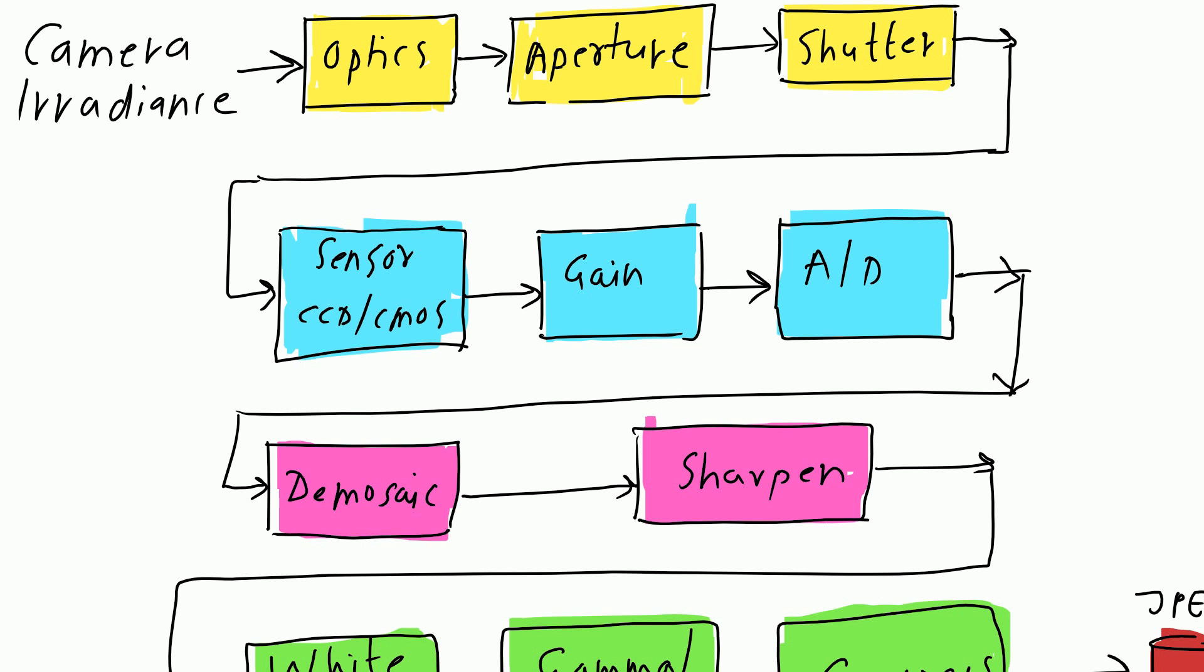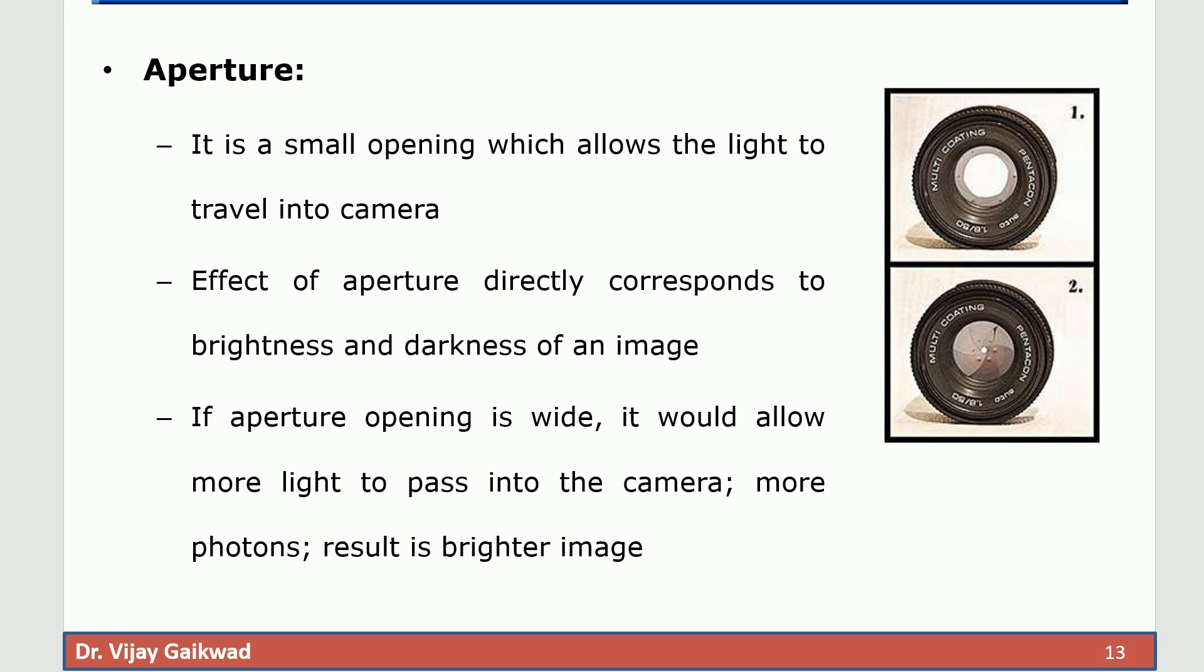The theory related with the light is called optics. The light falls through the aperture. Aperture is basically a hole or an opening through which the light travels.